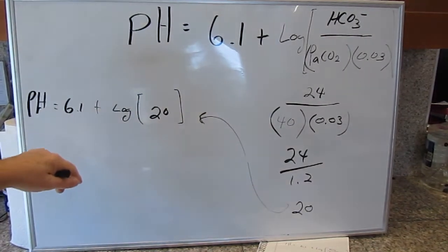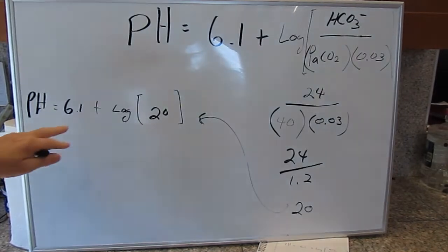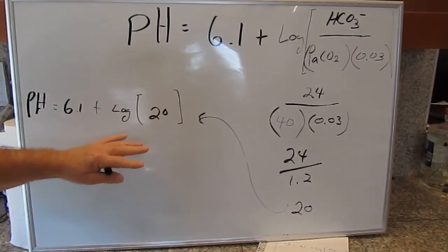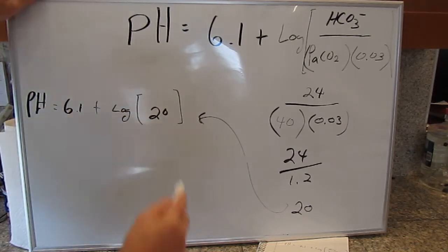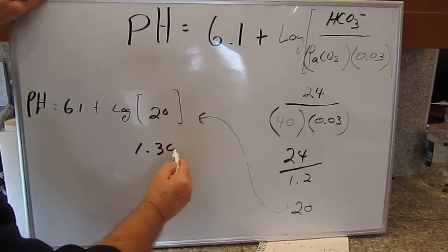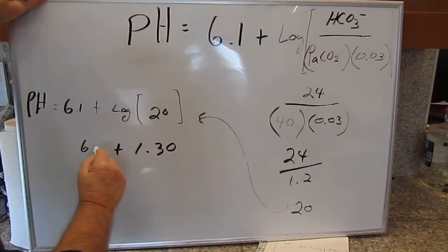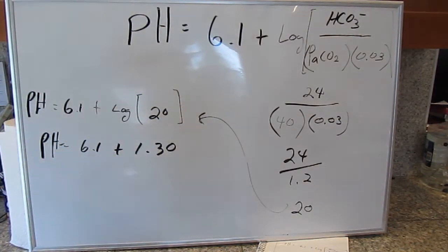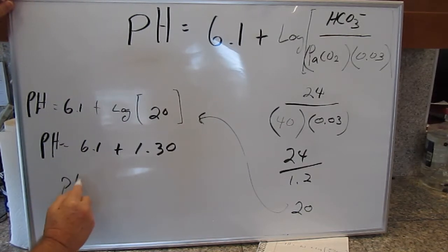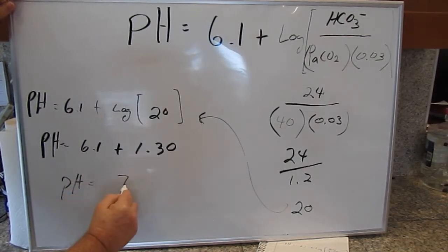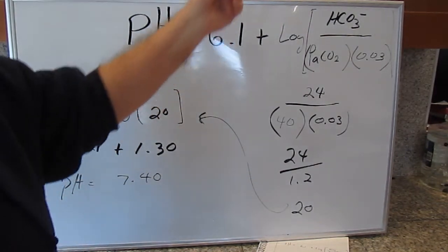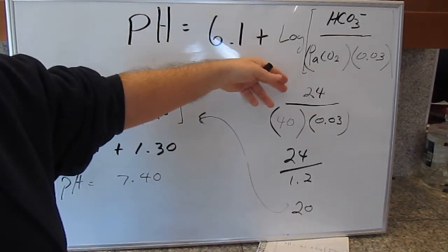So pH equals 6.1 plus the log of 20. Put the log of 20 into your calculator and you come up with 1.30. So the pH then equals 6.1 plus 1.3, which gives us a pH of 7.40. This is a normal pH for a normal CO2 and a normal bicarb.